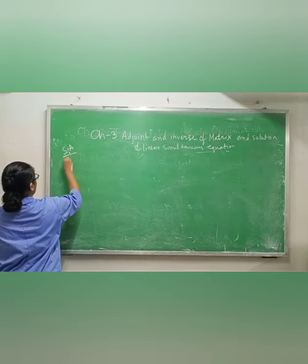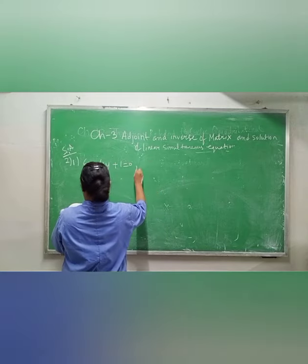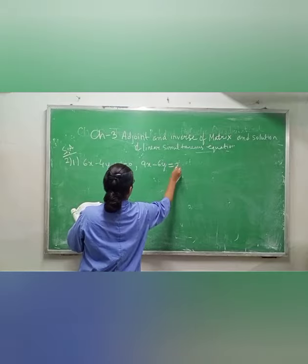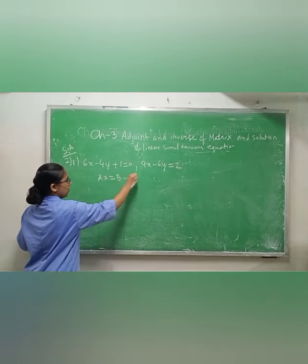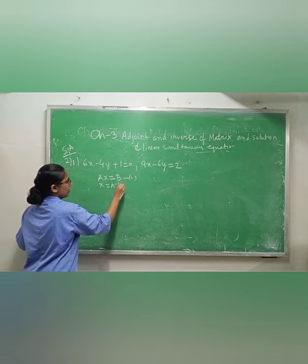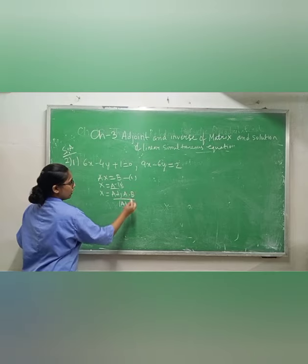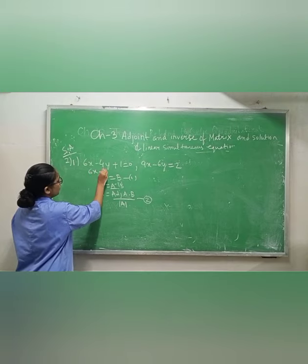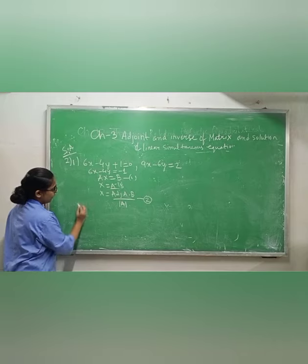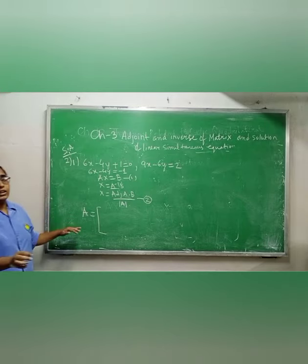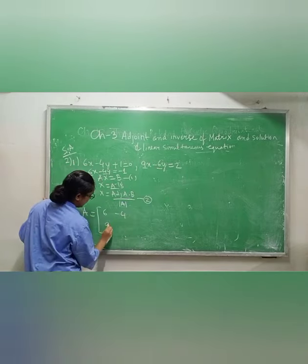The given equations are 6x − 4y + 1 = 0, which we rewrite as 6x − 4y = −1, and 9x − 6y = 2. We write AX = B. A is the coefficient matrix: [6, −4; 9, −6]. X is the variable matrix: [x; y] (only two variables, so no z). B is the constant matrix: [−1; 2].